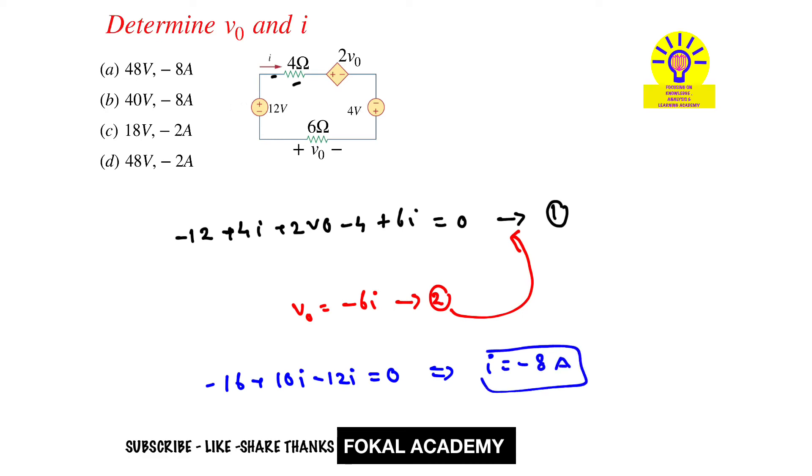Now substitute this current in equation two, then we get v0 equal to 48 volts. So current is minus 8 amperes and voltage is 48 volts. When you have these options, option A is the correct option.